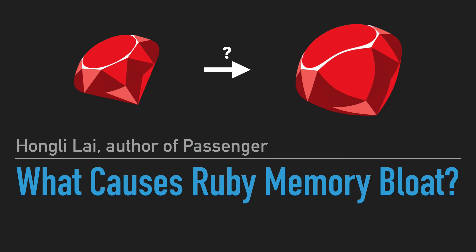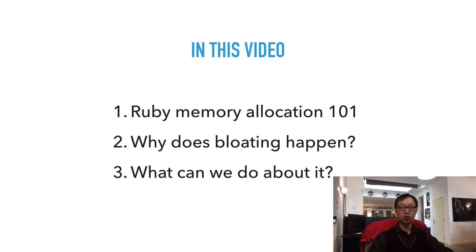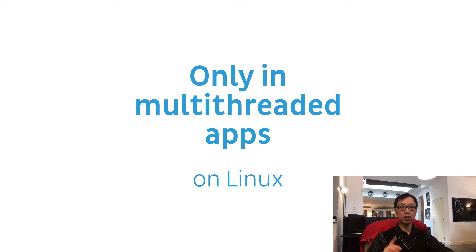Welcome to this video where I share the results of my research. My name is Hongli Lai and I'm the author of the Fusion Passenger Application Server. My talk will cover three things: first, Ruby memory allocation 101 — how does memory allocation work; second, why does this problem appear at all; and third, what can we do about it. One important thing to mention early on is that this problem only manifests in multi-threaded Ruby apps, and only on Linux — which is ironic, because multi-threading is supposed to give us more concurrency with little added memory usage.